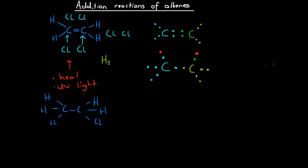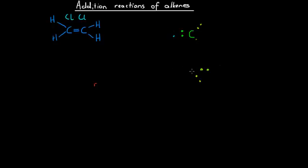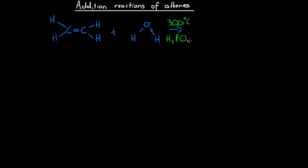Similarly, we could add hydrogen atoms across this bond and go from ethene to ethane. Another very specific and important type of addition reaction of ethene is one with steam or water. This reaction is often used in industry and large-scale engineering processes. We have our ethene molecule reacting with a water molecule under very specific conditions: it happens at 300 degrees Celsius and requires a solid phosphoric acid catalyst.